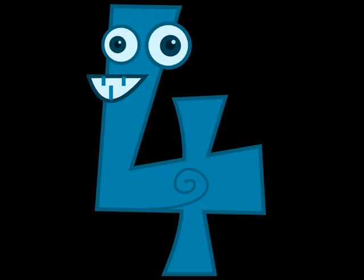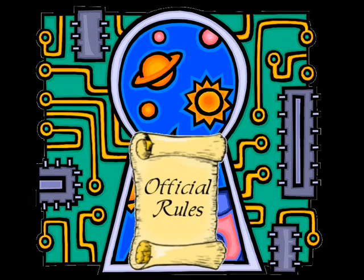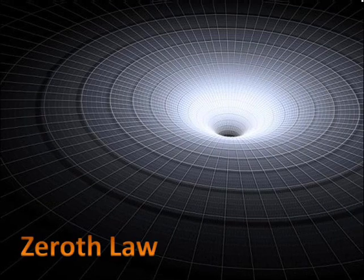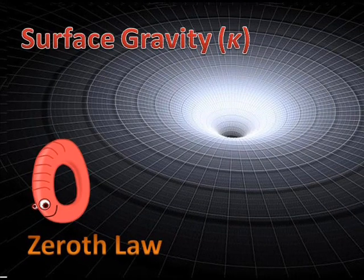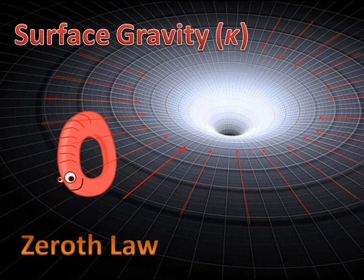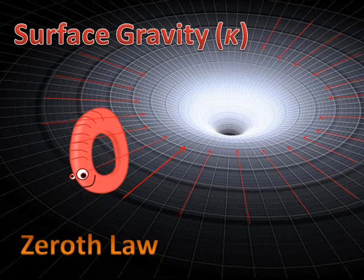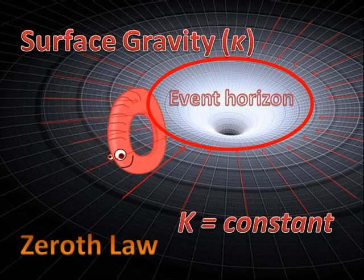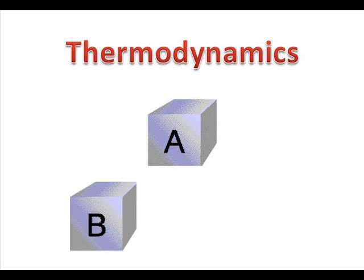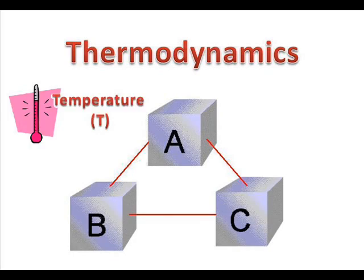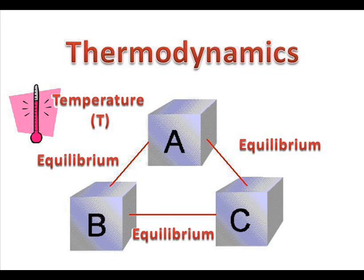They follow four simple rules which resemble those of thermodynamics. The zeroth law says that the surface gravity, which measures the strength of the gravitational field of a stationary black hole, is constant over the horizon. In thermodynamics, the temperature T is constant throughout the body at thermal equilibrium.